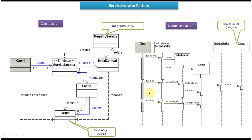This is how the whole flow works. Next time, if the client asks for the same target, the Service Locator will first look in the hash. If the service object is available in the hash, it will get the service object from the hash and return it to the client — it will not make a remote lookup. This is how we can improve performance using the hash. So the client asks the Service Locator for the target; the Service Locator checks the hash first, returns from there if found, otherwise makes a remote call to the registry service to get the target and adds it to the hash for future use.